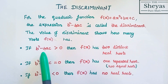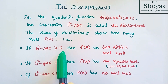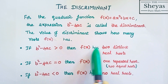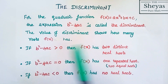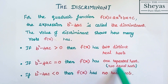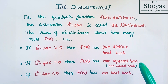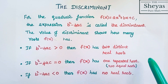If b squared minus 4ac is greater than 0, then it has two distinct real roots, which means that it has two different roots. If b squared minus 4ac is equal to 0, then it has equal roots. For example, if the root is 2, then both the roots will be 2 — that is one repeated root.